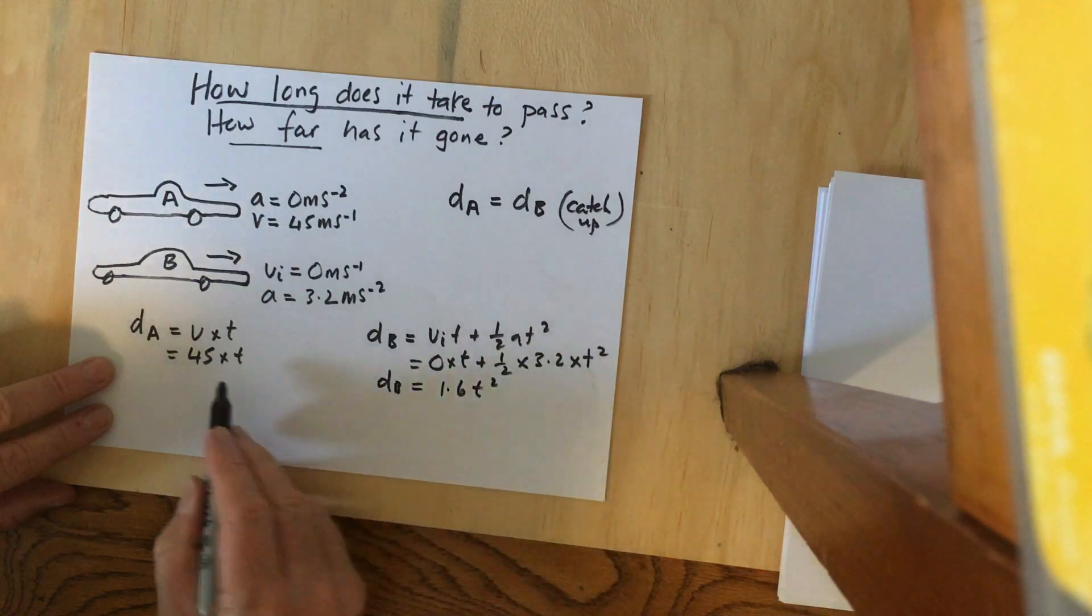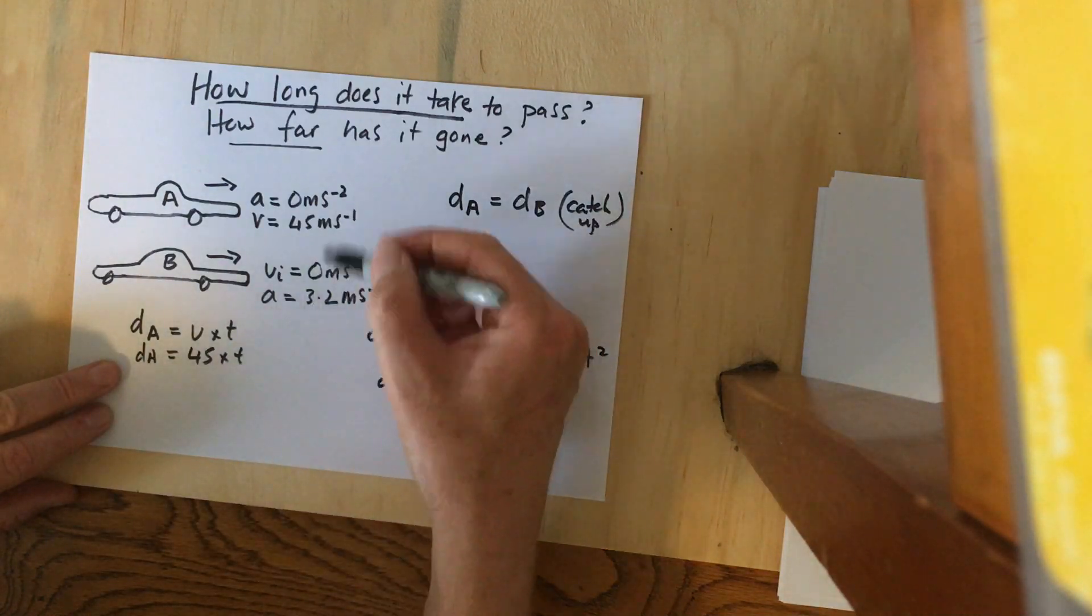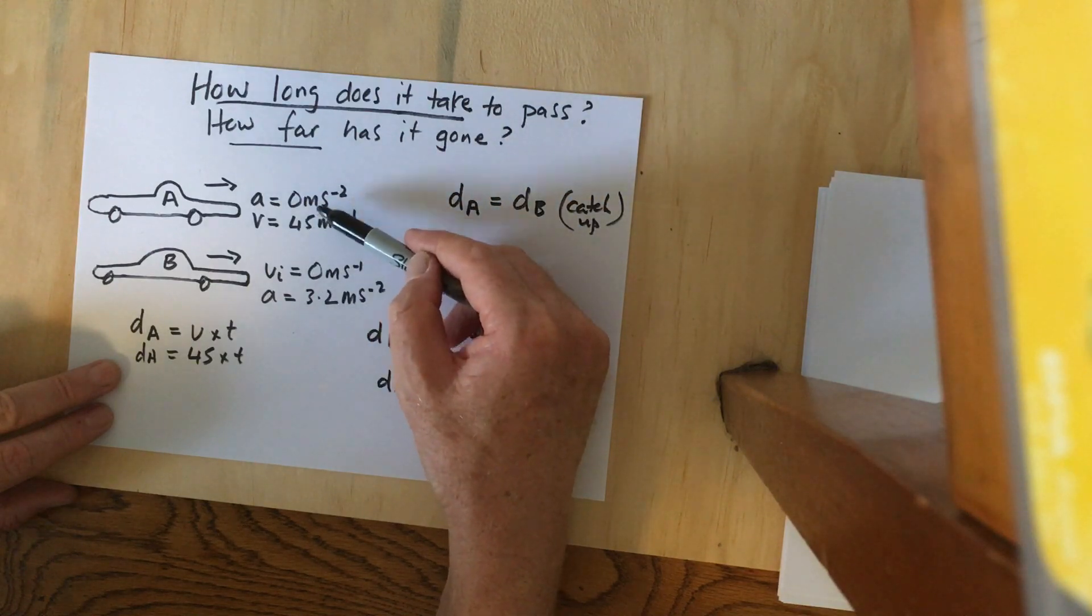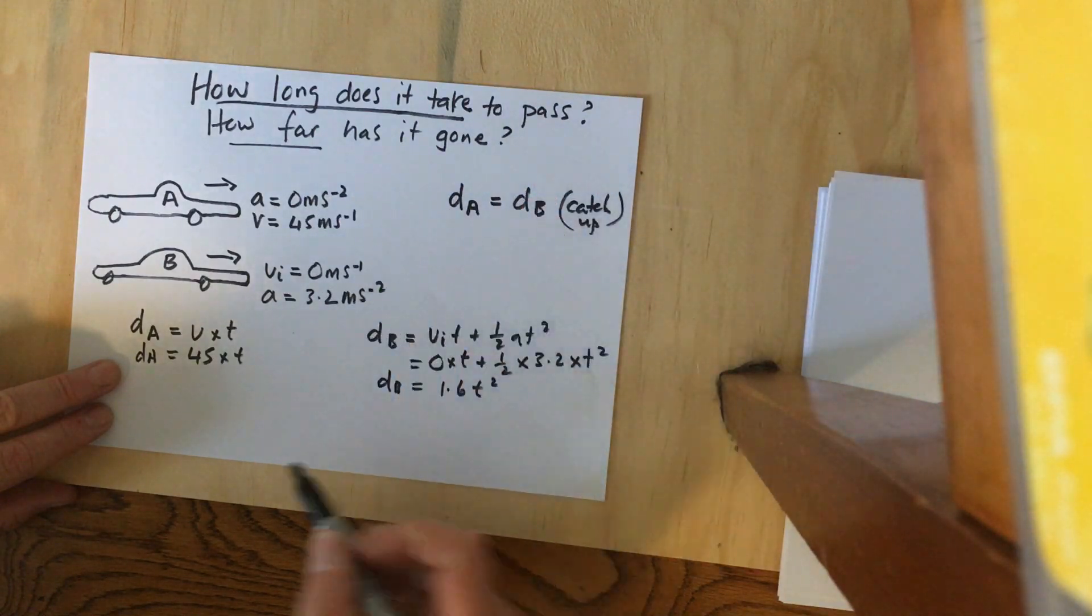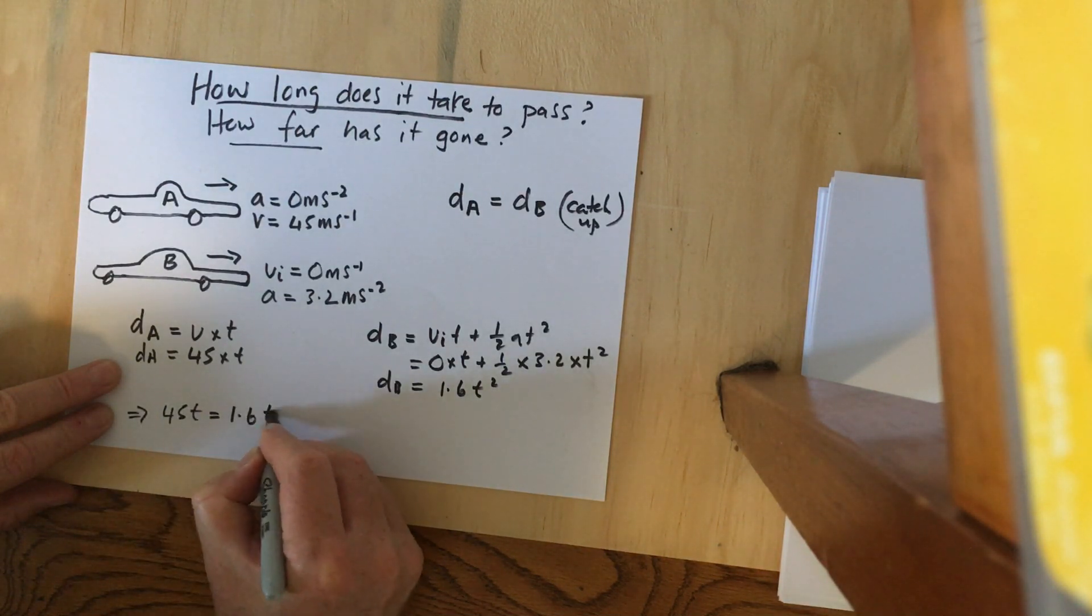Now we know that dA equals dB when Car B overtakes Car A—when they pass at that point. Therefore, 45t equals 1.6*t squared.